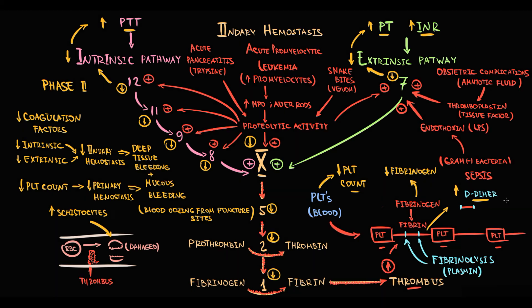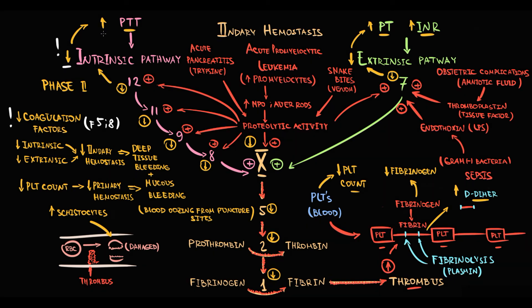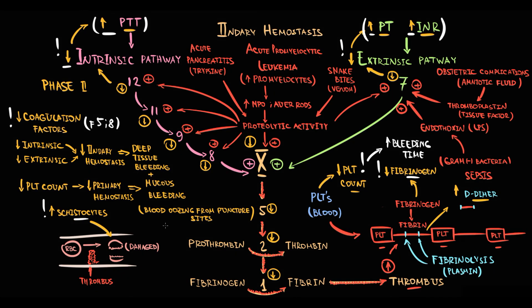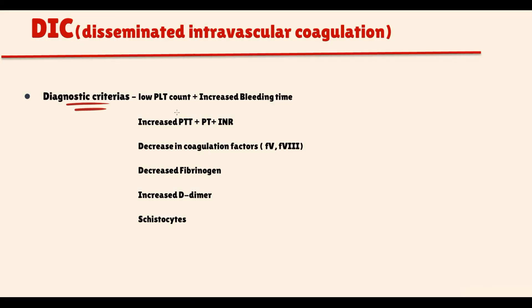Diagnostic criteria for DIC are decreasing coagulation factors. For this purpose, we determine the amount of factors 5 and 8. In addition, disruption of both pathways in secondary hemostasis will cause prolongation of PTT, PT, and international normalized ratio. Also the amount of platelets decreases, this will disrupt primary hemostasis and will cause prolongation of bleeding time. Low fibrinogen concentration and the presence of schistocytes are also characteristic features. Important that due to fibrinolysis, the concentration of D-dimer will be significantly elevated.